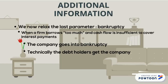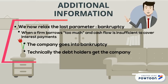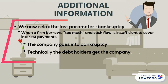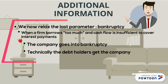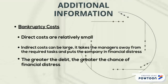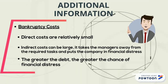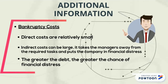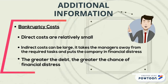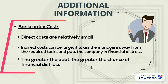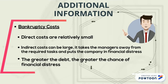We now relax the last parameter: bankruptcy. When a firm borrows too much and cash flow is insufficient to cover interest payments, the company goes into bankruptcy. Technically, the debt holders get the company. Bankruptcy costs: direct costs are relatively small; indirect costs can be large. It takes managers away from required tasks and puts the company in financial distress. The greater the debt, the greater the chance of financial distress.